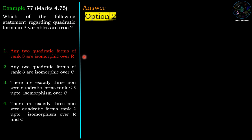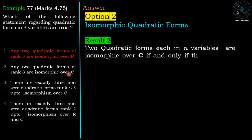Now for option 2, which is about isomorphism over the complex field. Two quadratic forms each in n variables are isomorphic over C if and only if they have the same rank. The condition is only rank, and hence option 2 is correct.